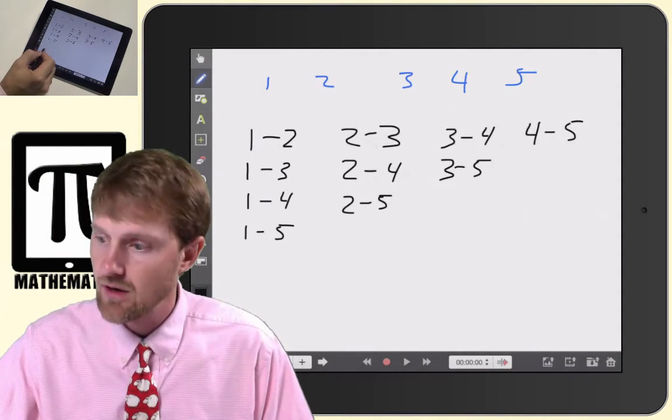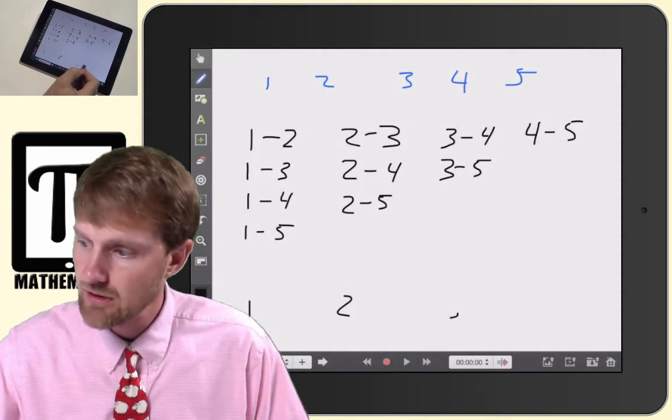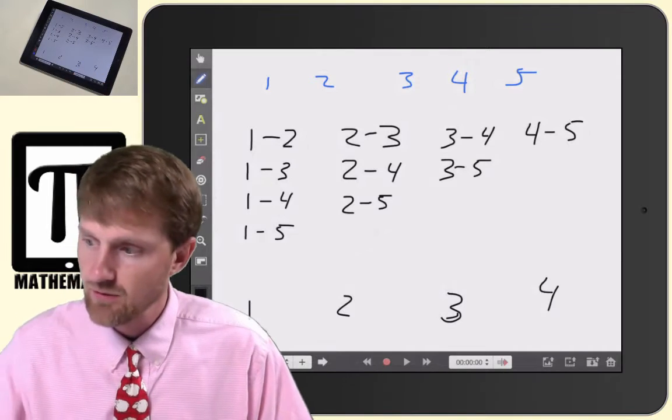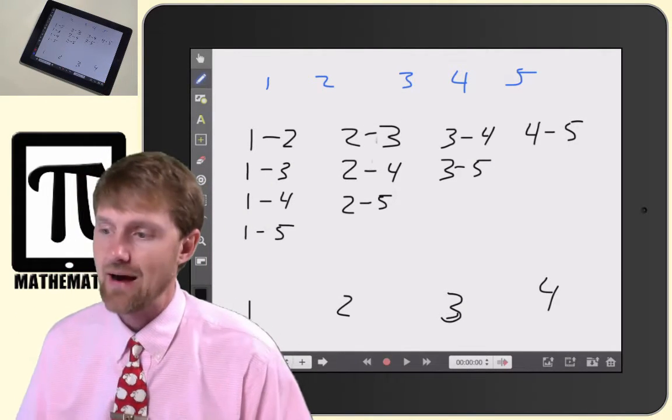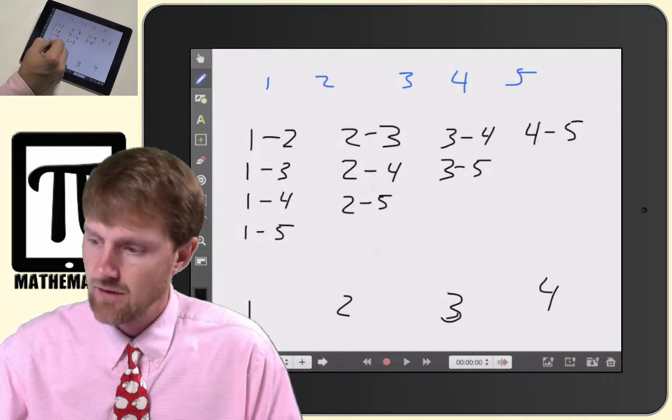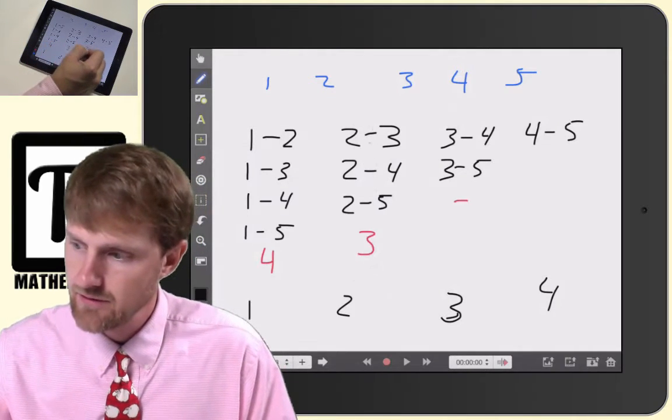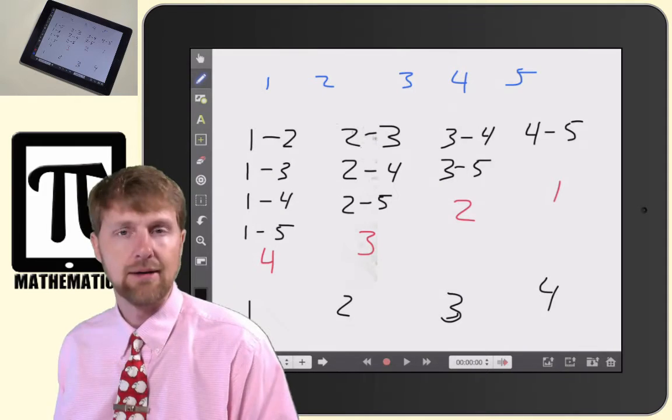So organized list, we have our person one, person two, person three, and then person four and all the shakes that they do. And then we add them up. So I have four there, three there, two there, and one there.